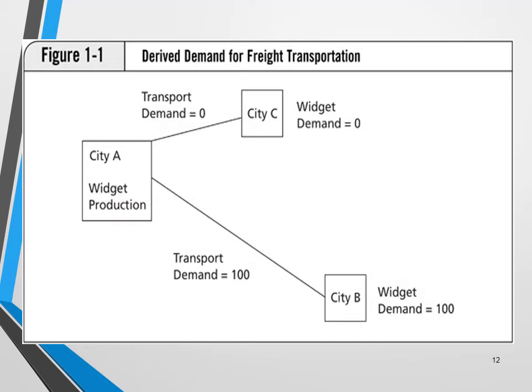For passenger movement, it's also a derived demand. Say you need to travel from your residence to campus — that demand for movement generates a demand for transportation. This figure explains derived demand: City A produces widgets, and Cities B and C are consumer locations. City C has no demand for widgets, while City B has demand. Because of the demand for widgets, a transportation demand of 100 units is created from City A to City B, while the route to City C has zero transportation demand.